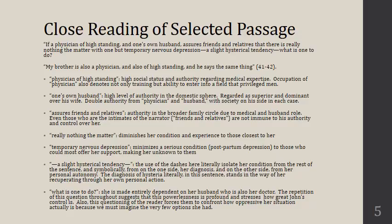'What is one to do?' — she's made entirely dependent on her husband, who is also her doctor. The repetition of this question throughout the story suggests that this powerlessness is profound and stresses how great John's control is. As readers, we're called to try to figure out who she's asking, to think through what she could do — which forces us to confront the myriad forces of oppression exerting domination over her socially, and to recognize how dominating and oppressive her circumstances actually are.